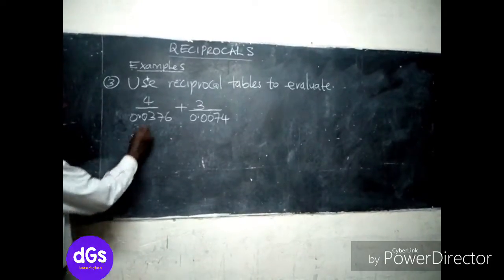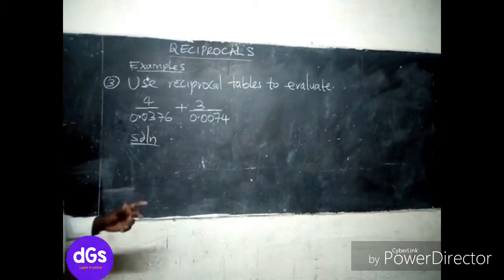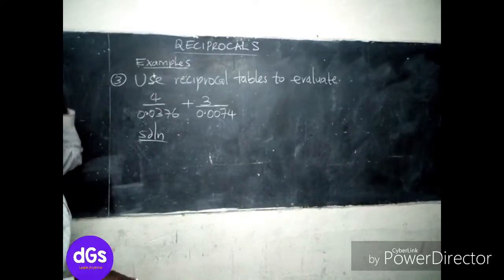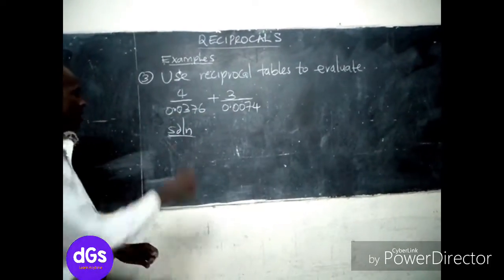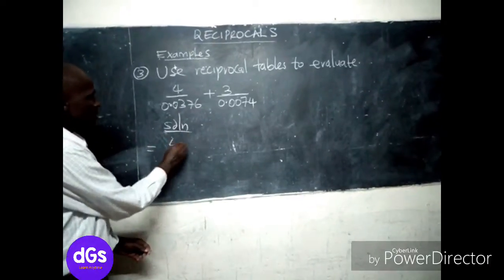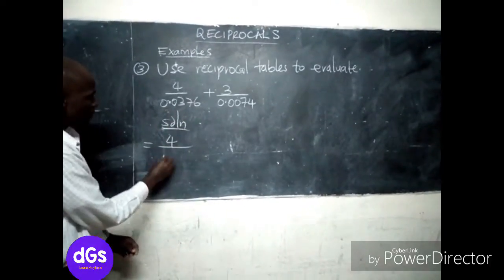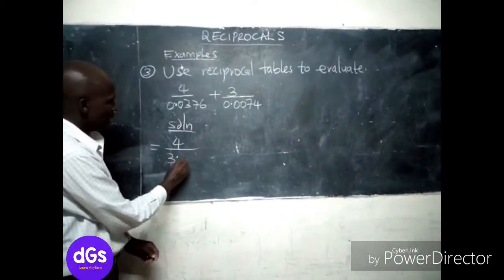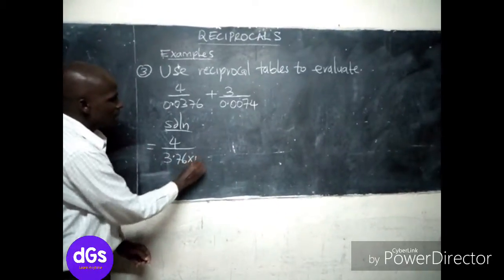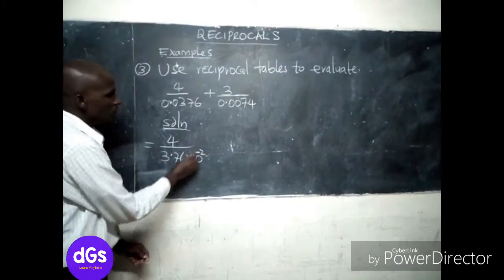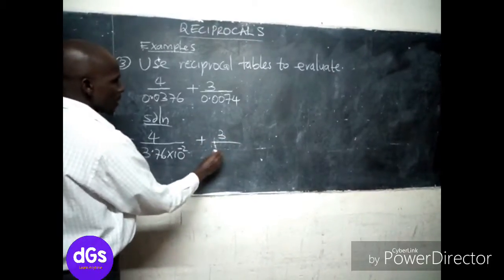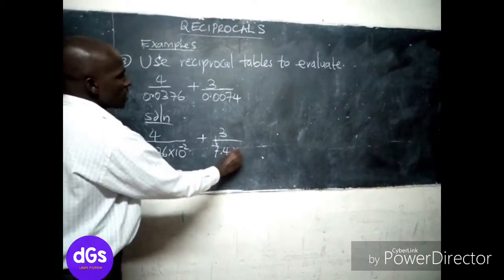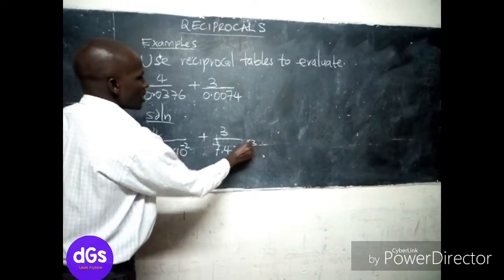Solution: For the first part, you have to express these numbers in standard form. So we're going to have 4 over 3.76 times 10 power negative 2, plus 3 over 7.4 times 10 power negative 3. That is very crucial, something you have to do.